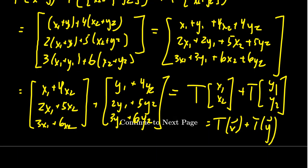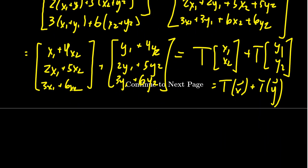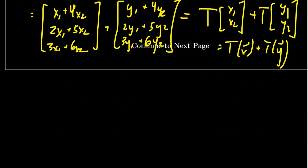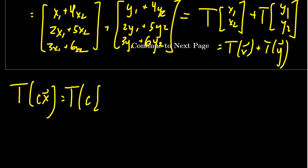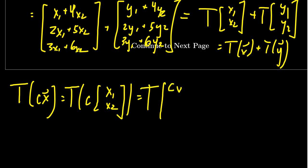We've now demonstrated that this transformation preserves vector addition, showing T of X plus Y equals T of X plus T of Y. Next, we want to do the same thing for scalar multiplication. So we're going to take T of C times X. Remember X is just the vector X1, X2, so if you multiply that by a scalar, you end up with CX1 and CX2.